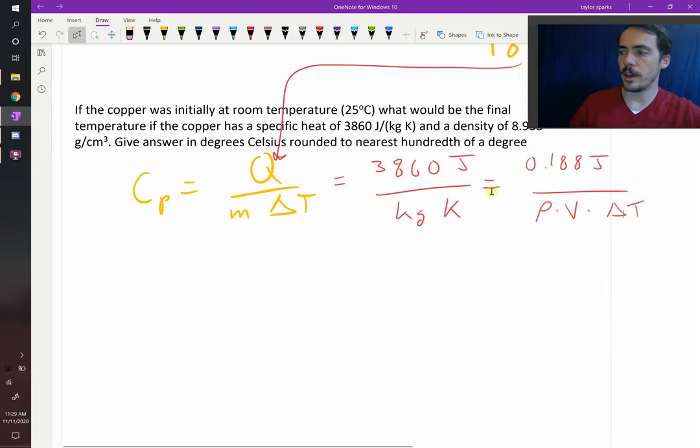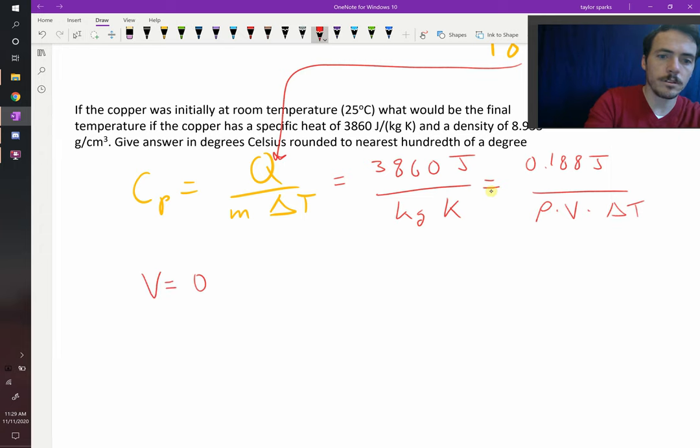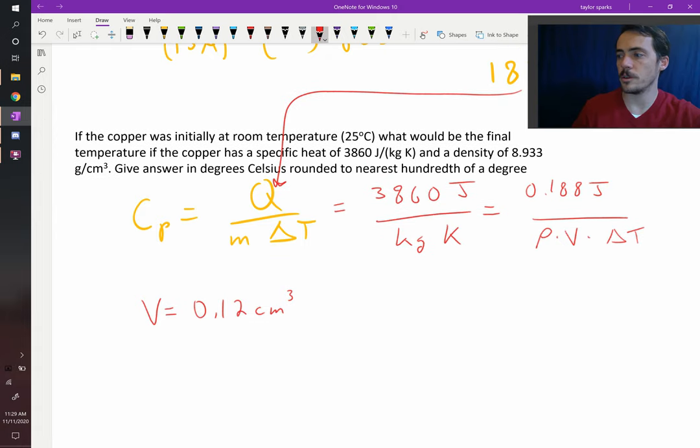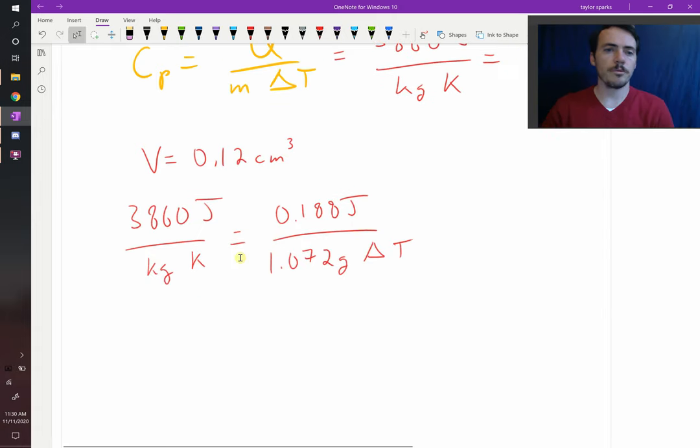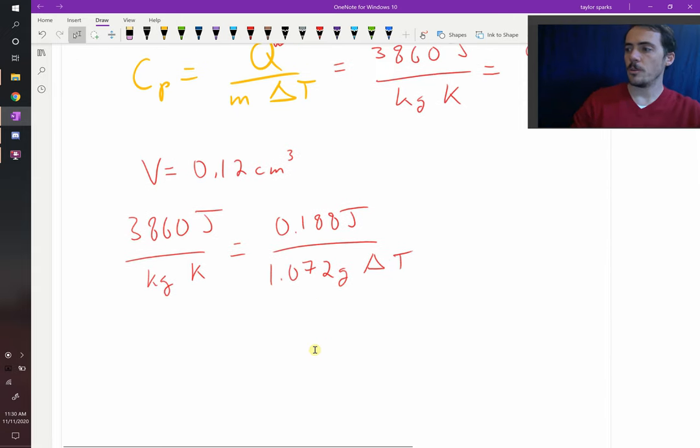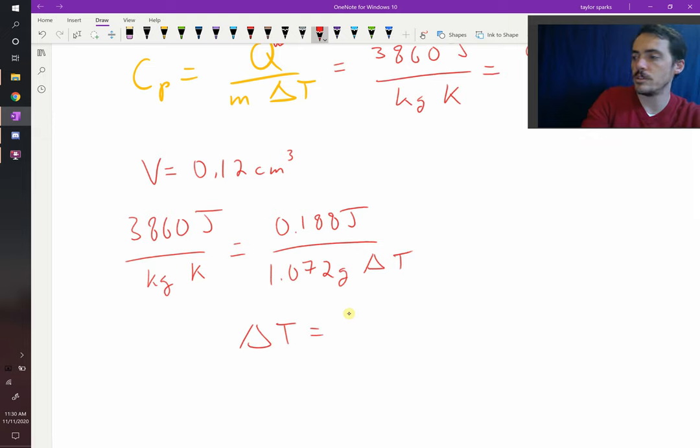When I do that, let's go ahead and plug in some of these numbers. I find that our volume is equal to 0.12 centimeters cubed. Remember, you need to convert from millimeters to centimeters there. We know the density is 8.933 grams per centimeter cubed. We've plugged in density multiplied by volume, and now we have a mass of our copper. We need to convert that to kilograms and then we can solve for our delta T. When I plugged all that in, I find that delta T is equal to 0.045 degrees Kelvin.